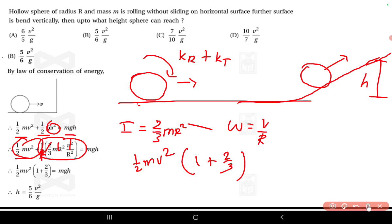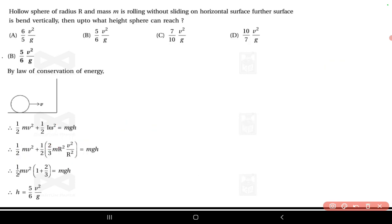So it equals mgh. M and M will cancel. 3 + 2 = 5, so 5/6 because there's 2 here. Therefore h equals 5v²/6g.